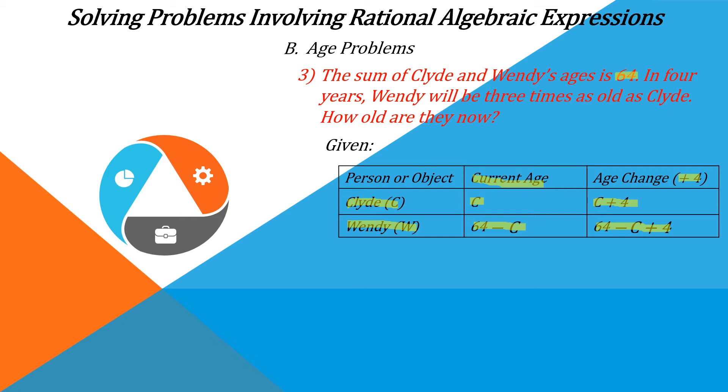Now, in taking all this data, we can solve for the required of this problem. And the required is: number of years for C and number of years for Wendy.